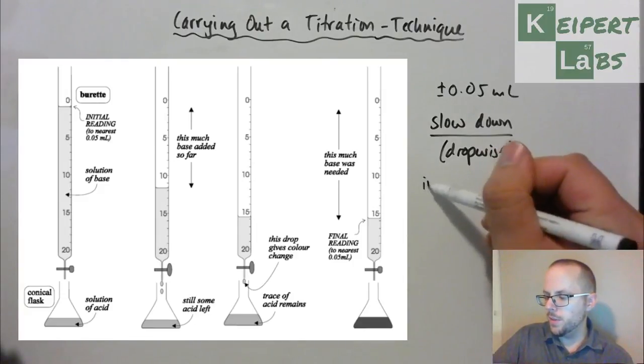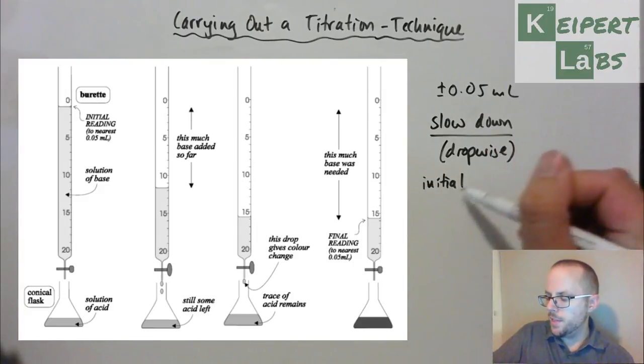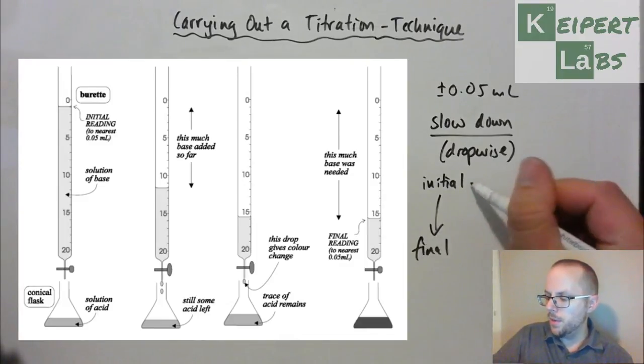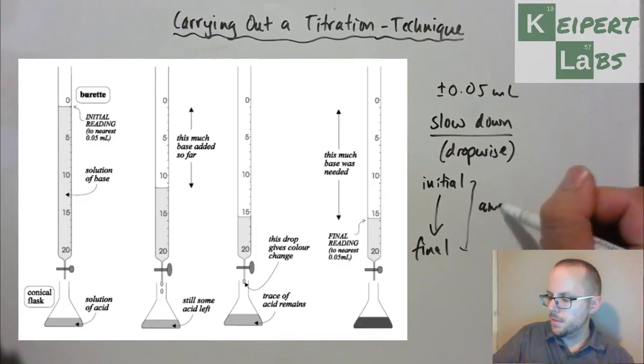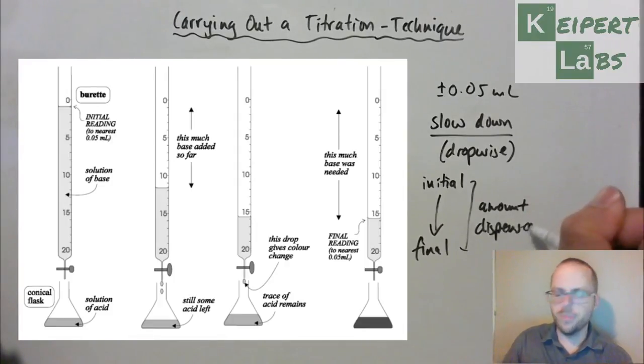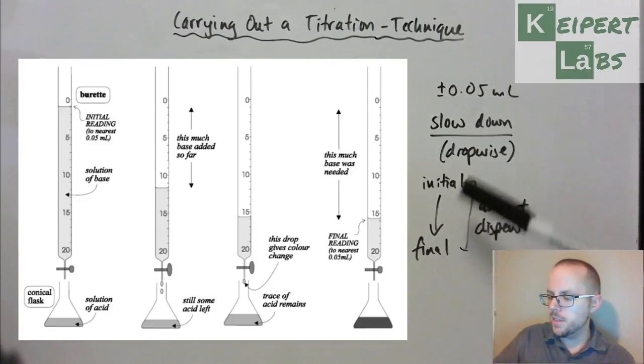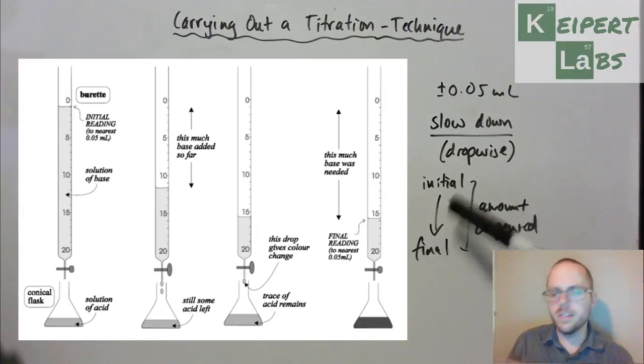And so then what we can do is, we can say, alright, well this was our initial volume, and this was our final volume, and so we can say this amount is the amount dispensed. The amount that's actually come out of the bottom of the burette, into the conical flask, causing our reaction. So we always need to measure these two volumes, and then subtract to work out how much base, or how much reactant has been added to cause that reaction.